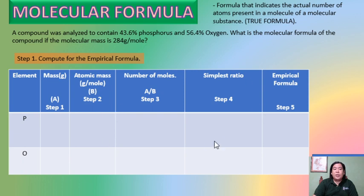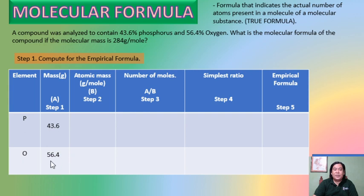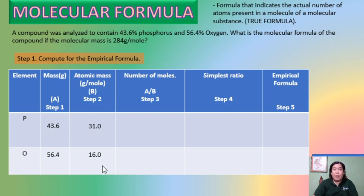In computing for the empirical formula, we complete a data table. We have two elements: phosphorus and oxygen. To identify the mass, simply change the percentage sign — 43.6 grams for phosphorus and 56.4 grams for oxygen. For column B, atomic mass: consult your periodic table. Phosphorus is 31.0 g/mol and oxygen is 16.0 g/mol. Then compute the number of moles using mass-to-mole stoichiometry — divide column A by column B.